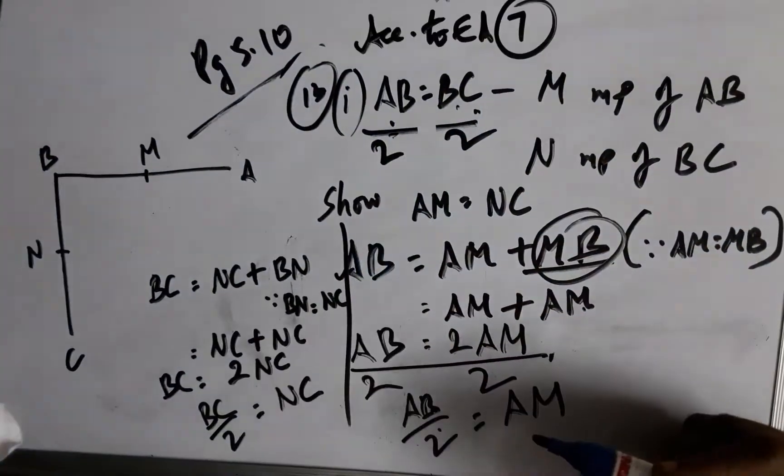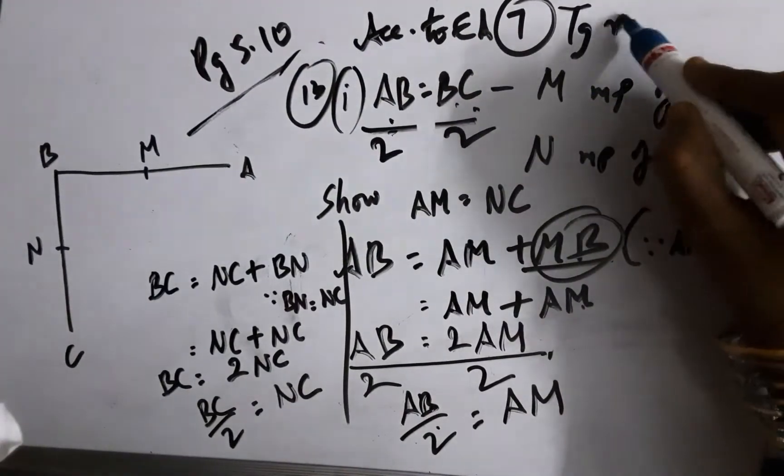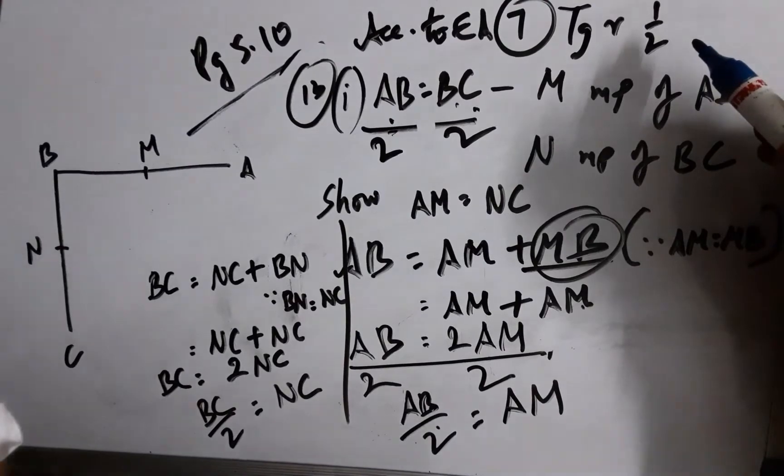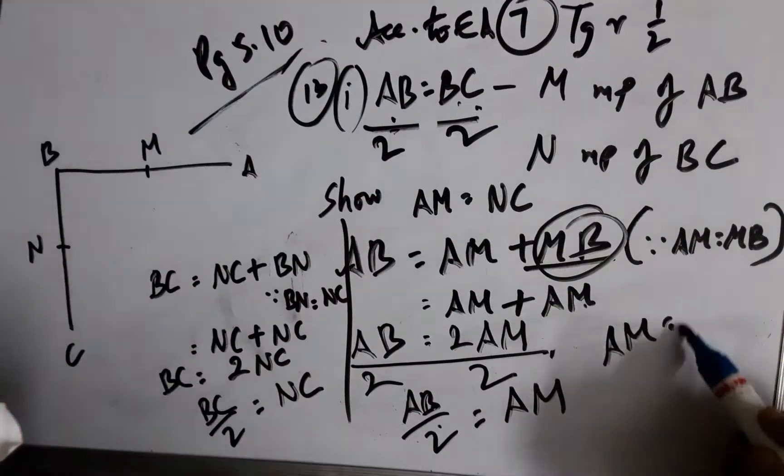Things which are halves of the same thing, by Euclid's axiom number 7, are equal to one another. Therefore, I have AM equals NC, hence proved.